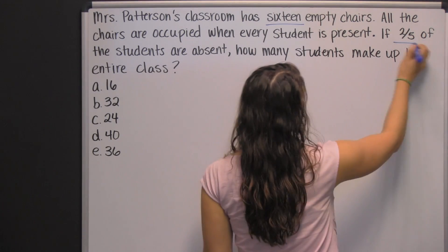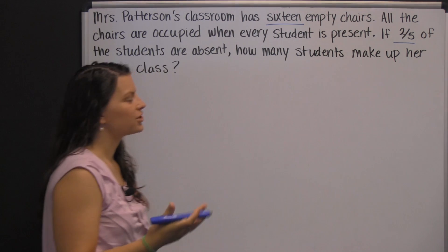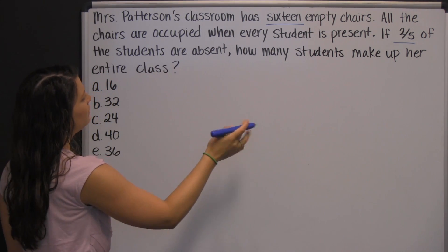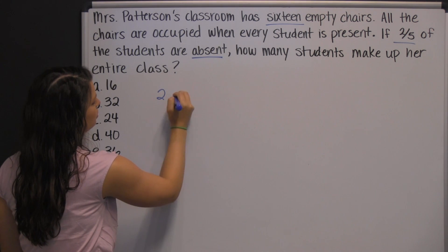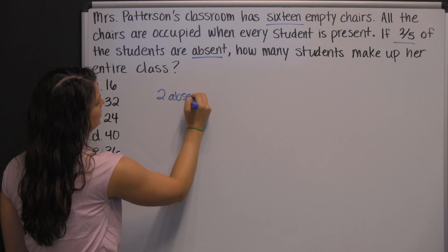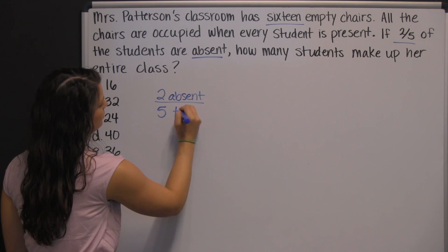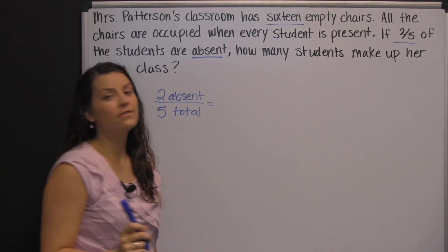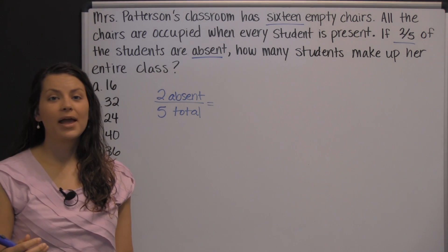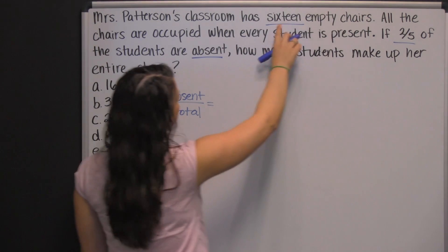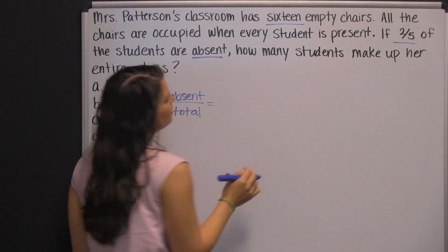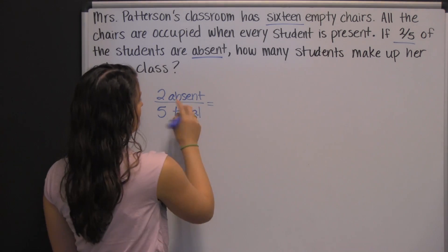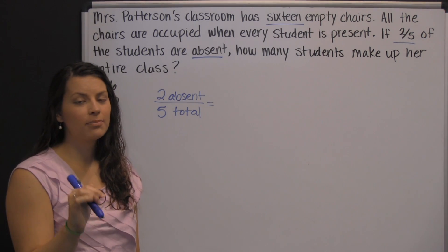So here they gave us a ratio or fraction that we can use. It's two out of every five students are absent — two absent to five total. Using this ratio and the third piece of information, we can set up a proportion. We have sixteen empty chairs, and they're empty because there are sixteen students absent.